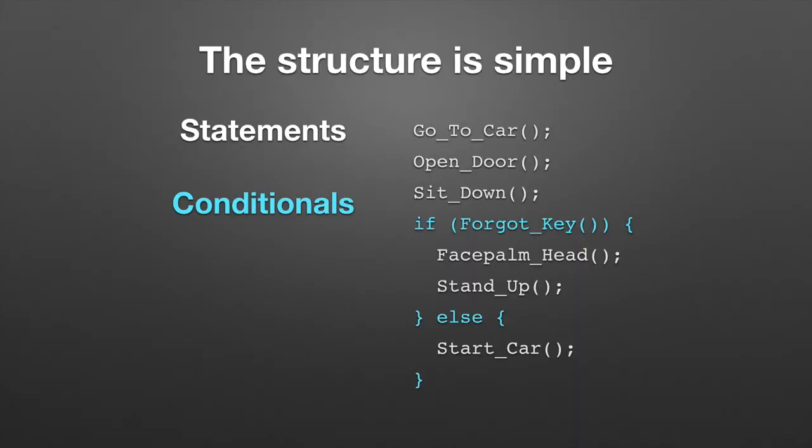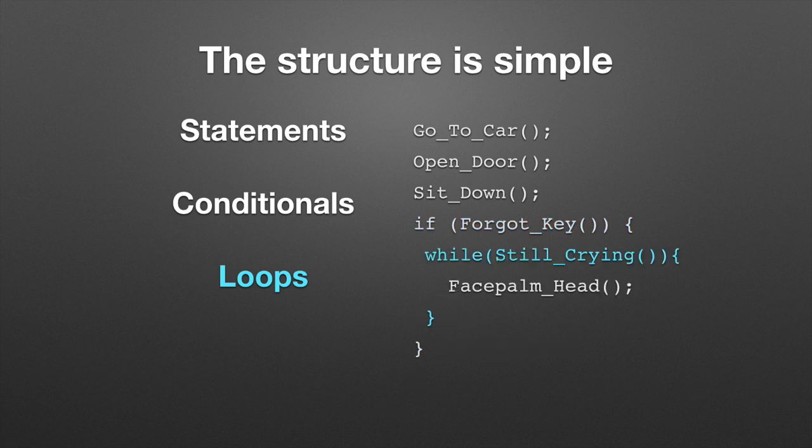Number three are loops. Loops are when you want to do one thing over and over again. So as long as I keep crying, keep hitting myself in the head because I forgot my key — you can write code like that.